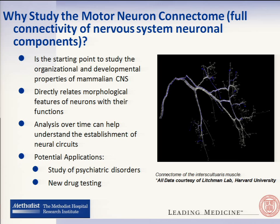By looking at how these connectomes are formed over time, we can see how the neural circuits develop. Some of the potential applications include the study of psychiatric disorders such as schizophrenia, where by looking at differences between the normal and the disease mouse model connectomes, neurobiologists can determine whether these differences have any direct impact on the disease itself. Or for testing new drugs, by doing a time series analysis, we can see whether the drug is actually working by looking at the differences.